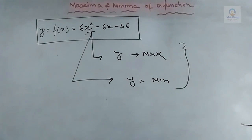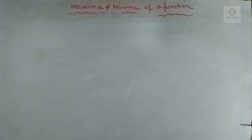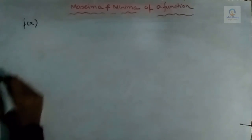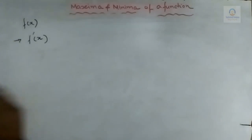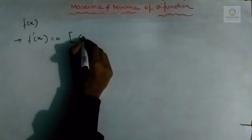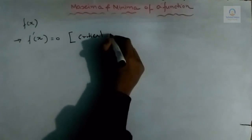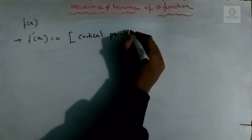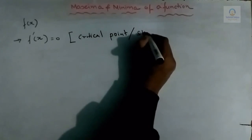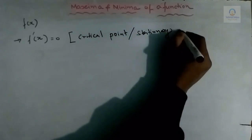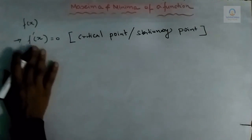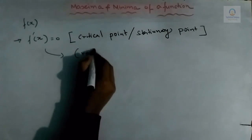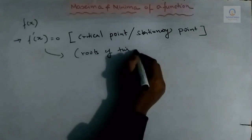Let us see the steps for calculating the maxima and minima of a function. Suppose we have a function f(x). The first step is to calculate f'(x), the first differentiation of f(x), and equate it to 0 in order to find the critical points, also known as stationary points. We solve this equation for x, and the roots are known as critical points.